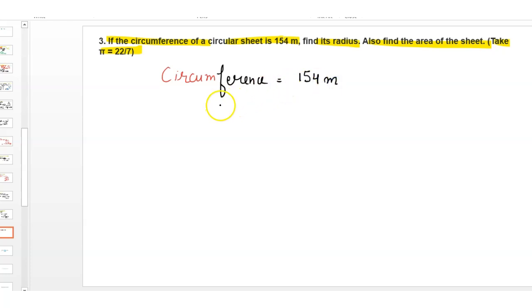Circumference of a circle is 2πr equals 154. Then r equals 154. Here 2π is multiplied with r, then it will be shifted to the right-hand side. Then it will be divided by 154.